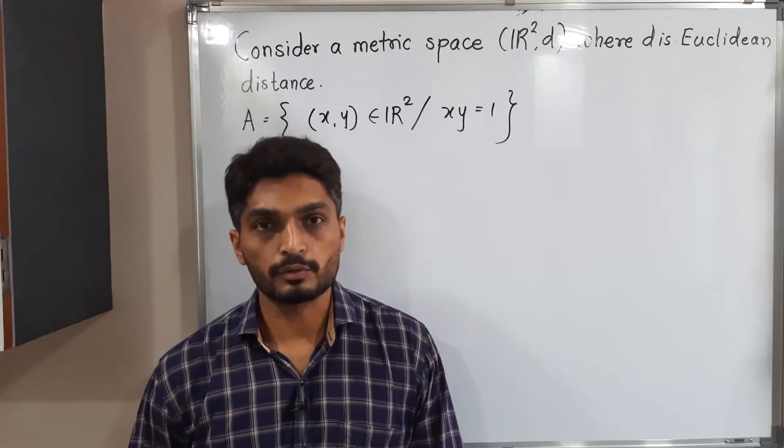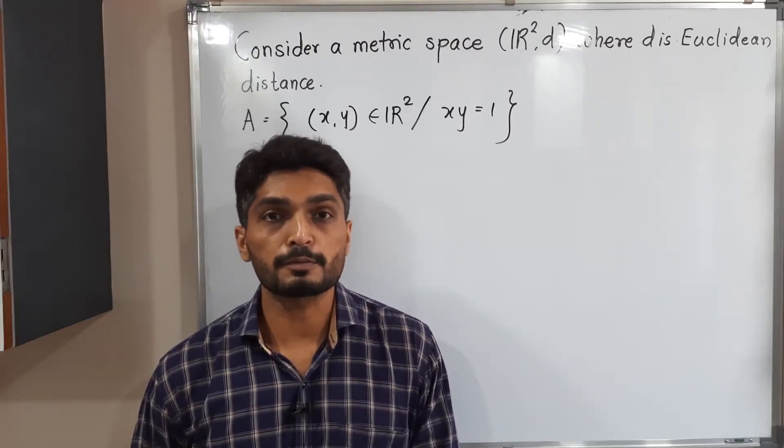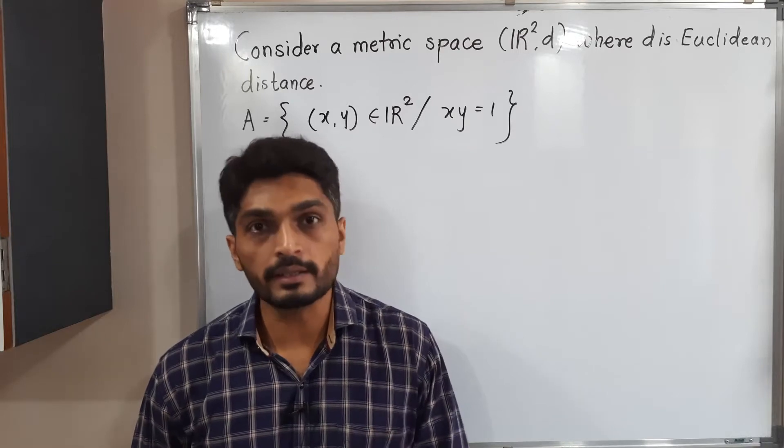Let us discuss this example. In this example we have a metric space R² where d is Euclidean distance.